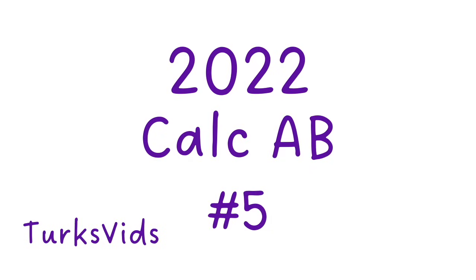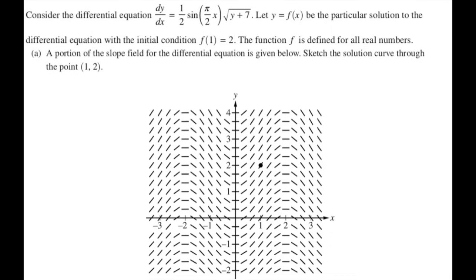In this video, we're doing number 5 from the 2022 Calc AB exam — a differential equation problem. Consider dy/dx equals 1/2 sine of pi over 2x times the square root of y plus 7. Let y equals f of x be the particular solution with initial condition f of 1 equals 2. For part A, a portion of the slope field is given; sketch the solution curve through the point 1, 2. I like to picture the slope field as flowing water — you jump in at the given point and follow the contours.